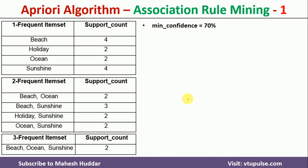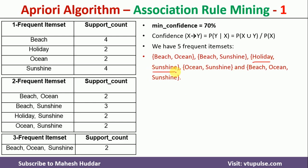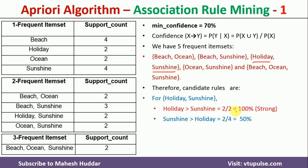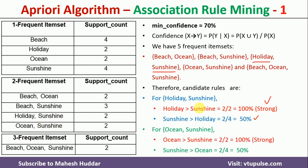For holiday-sunshine: holiday → sunshine gives 2/2 = 100%, a strong rule. Sunshine → holiday gives 2/4 = 50%, not a strong rule. For ocean-sunshine: ocean → sunshine gives 2/2 = 100%, a strong rule. Sunshine → ocean gives 2/4 = 50%, not a strong rule.